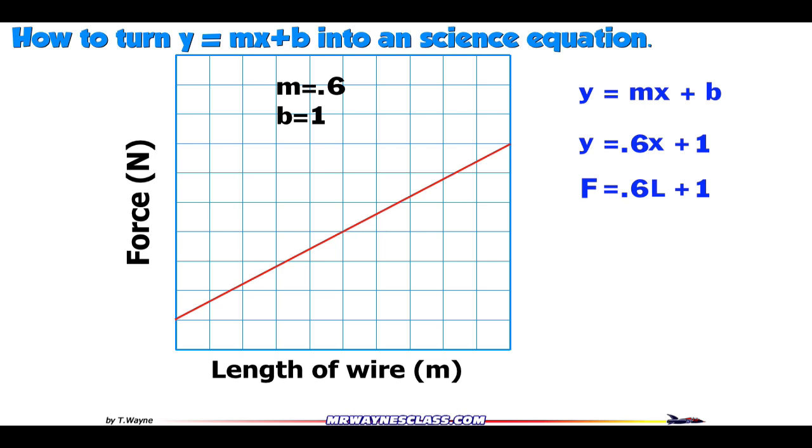So now the equation is F is equal to 0.6L plus 1. And that's the equation that you're going to put into the lab report. That's the equation you would publish. It would be F equals 0.6L plus 1.